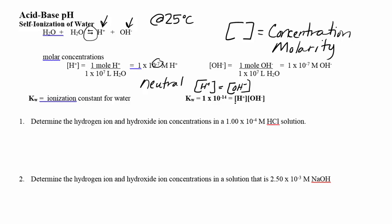It's a constant called KW, and it equals 1×10⁻¹⁴ — always that value. So if I know one of my concentrations, say hydrogen, I can calculate the hydroxide by rearranging the equation: hydroxide equals KW over hydrogen.